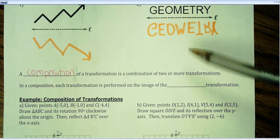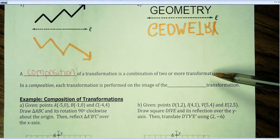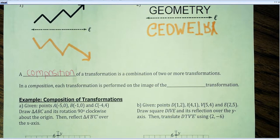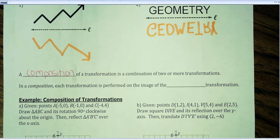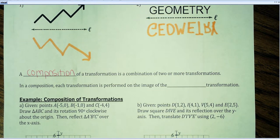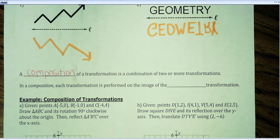So I'm going to write a composition of a transformation is a combination of two or more transformations. And what that means is they're going to ask you maybe to do a reflection and then a translation, or a rotation and then a reflection, or a combination of transformations that we've been talking about. So your options so far are going to be rotations, reflections, and translations.